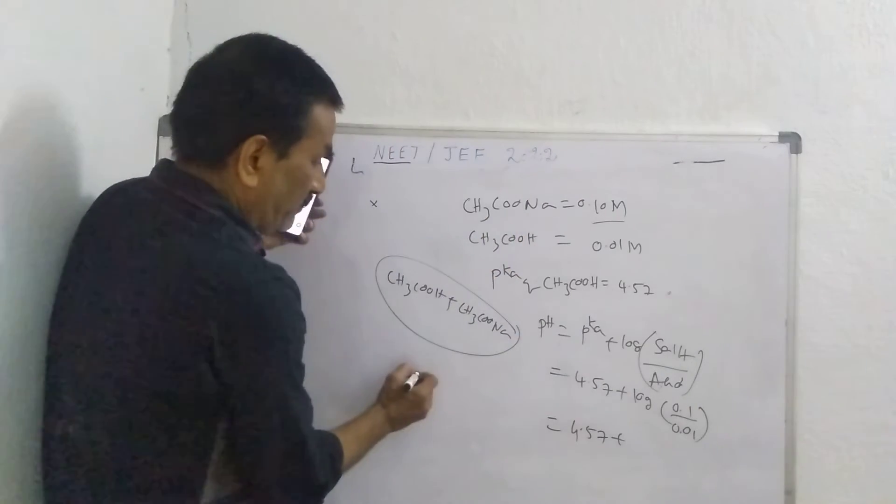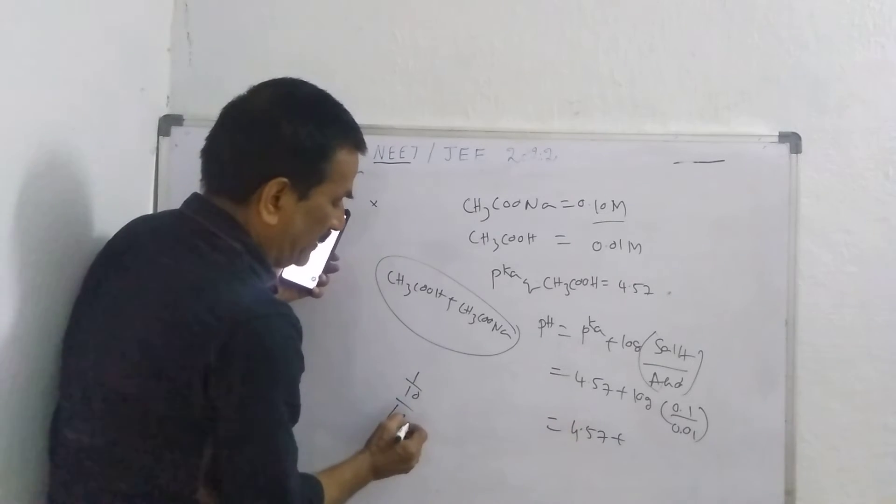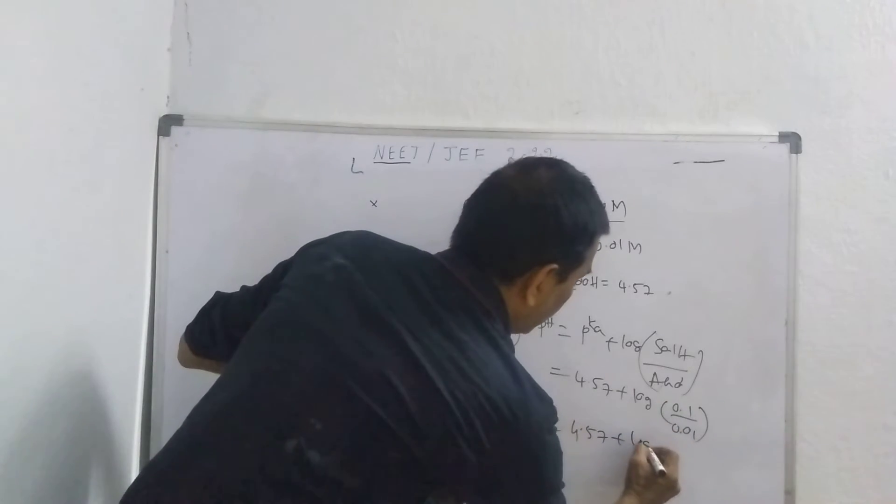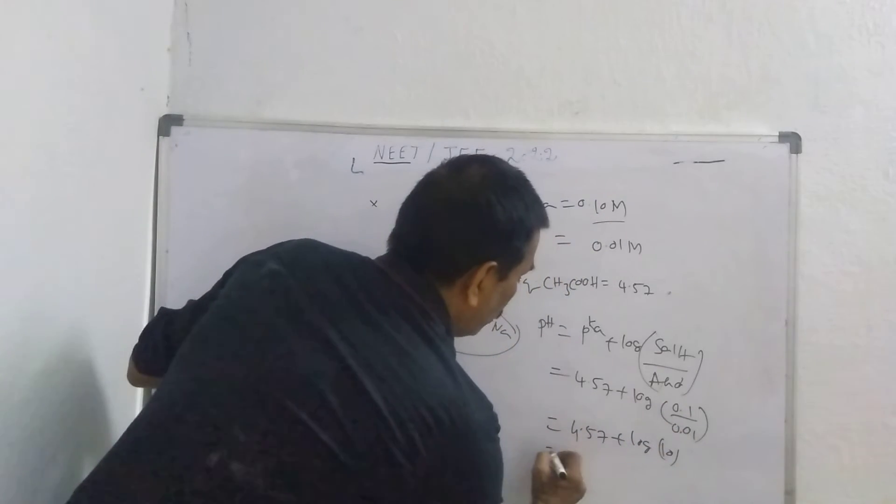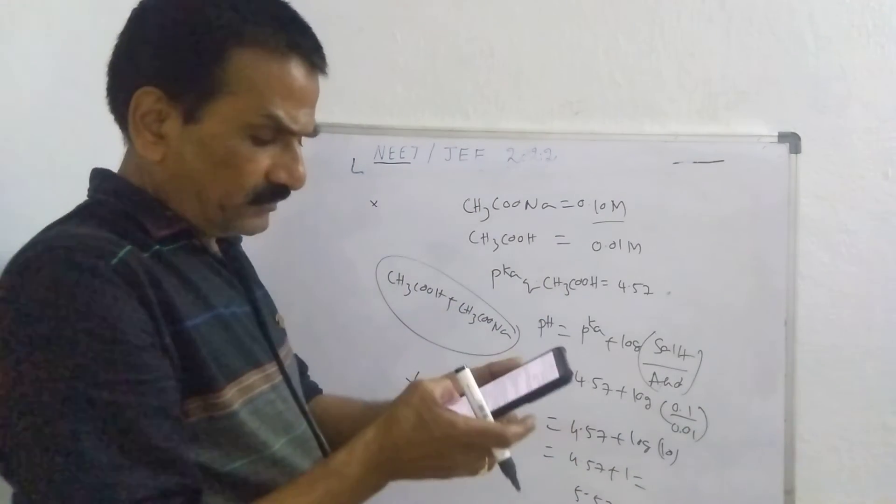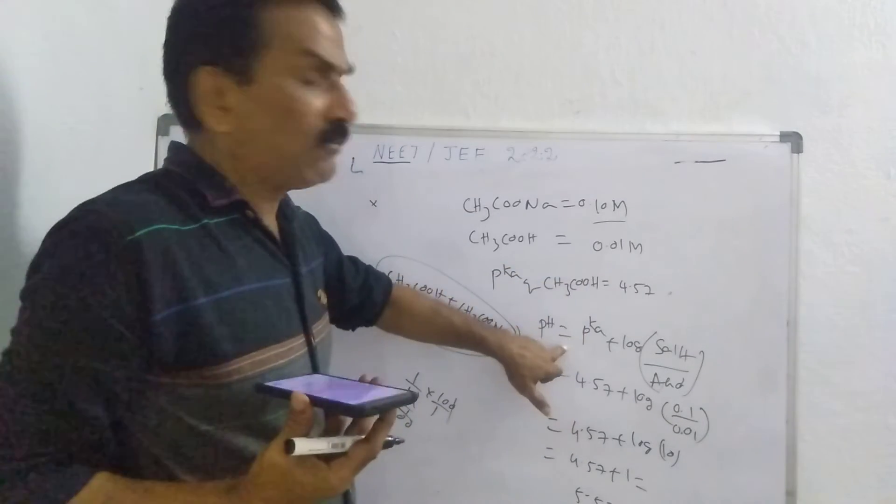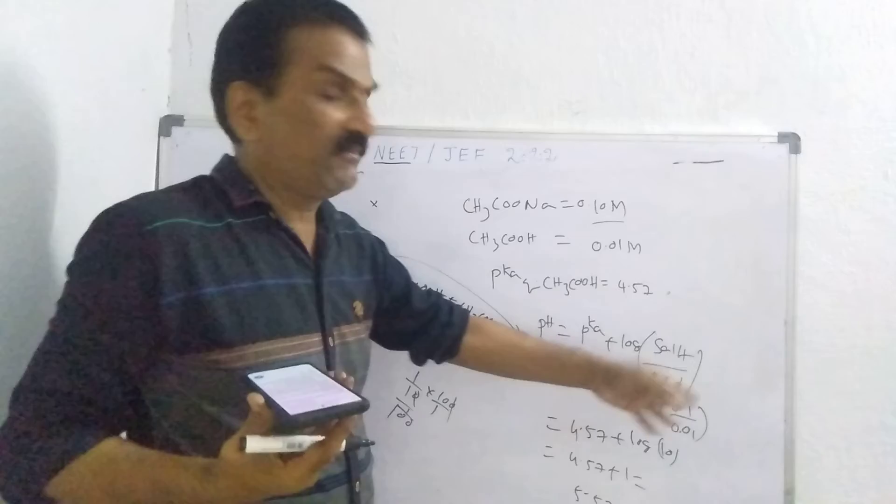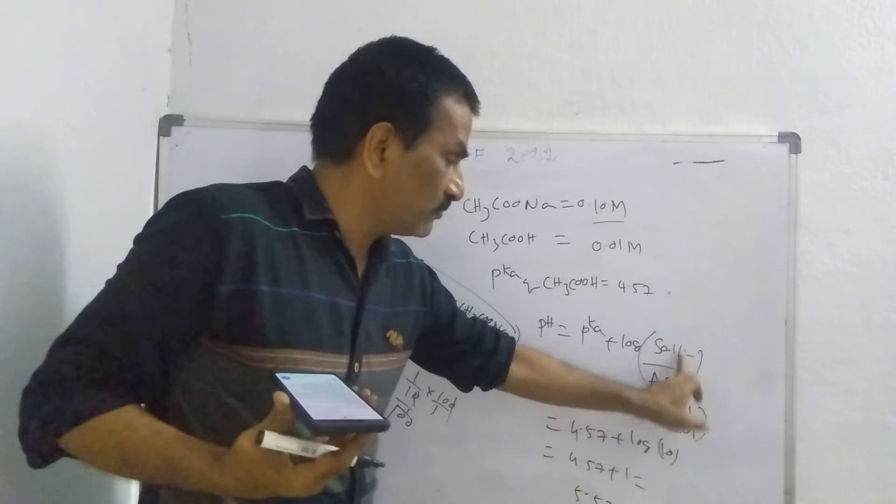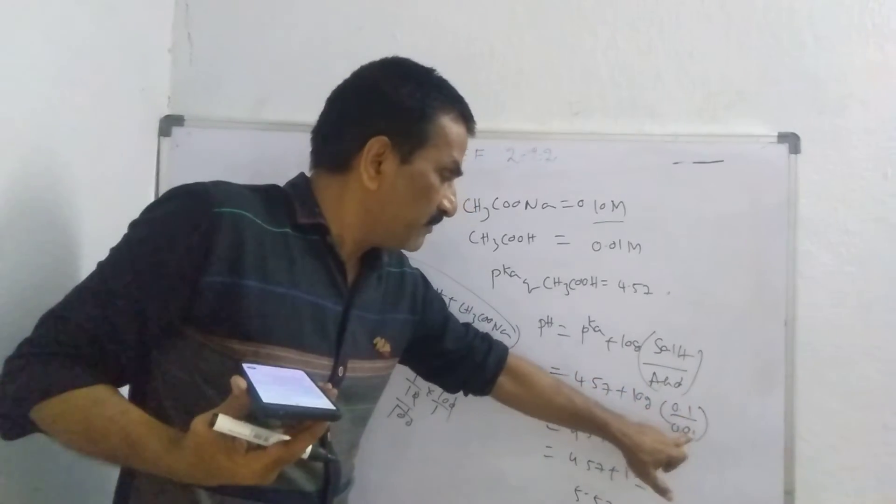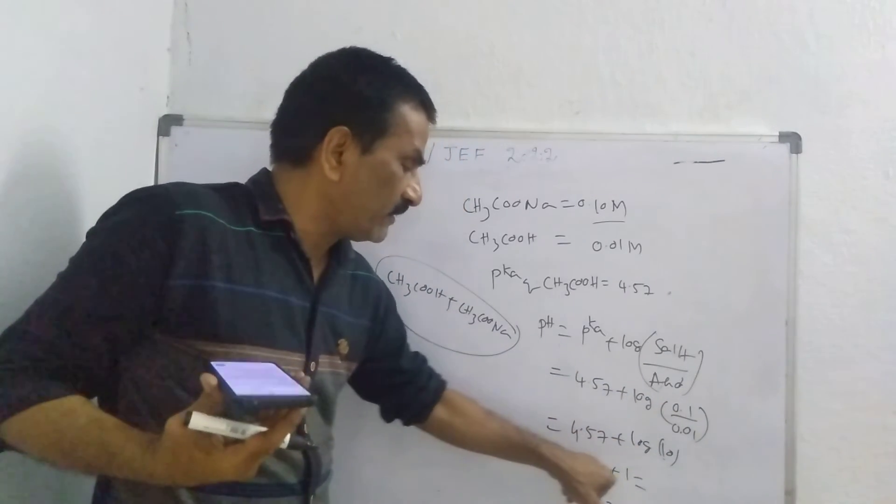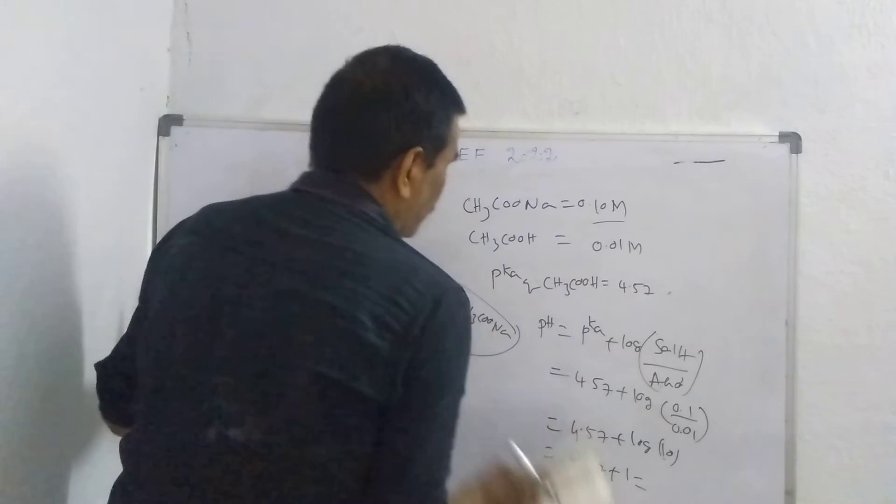If you substitute, 0.1 means 1 by 10, 0.01 means 1 by 100. So 100 by 10, cancel, we have log 10. Log 10 means 1. So 4.57 plus 1 is equal to 5.57 is the right answer. A is the right answer. So simply, if you know the formula, pH is equal to pKa plus log salt by acid. Acetic buffer solution. pKa has given, log salt, concentration of salt has given, acid has given. If you substitute these values, then you go for calculation. 4.57 plus 1 is equal to 5.57 is the right answer.